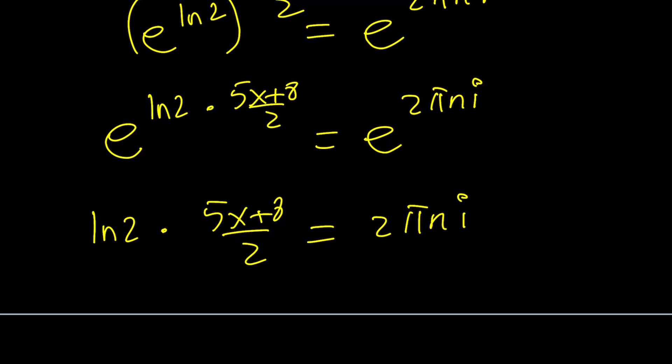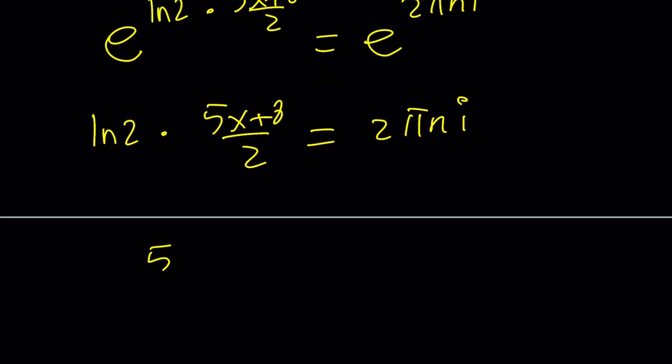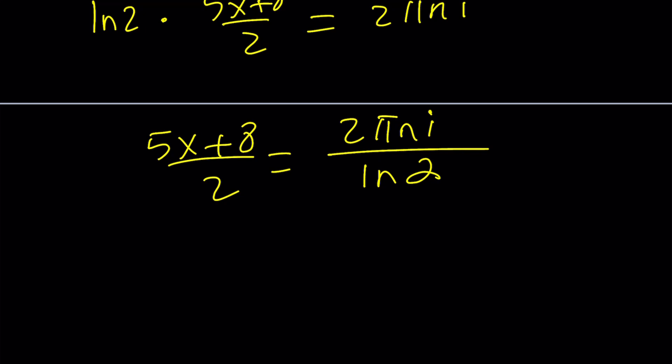And remember, our goal is to solve for x. So what should I do? I need to isolate the x. So let's go ahead and divide both sides by ln 2. That gives us 2 pi n i divided by ln 2.